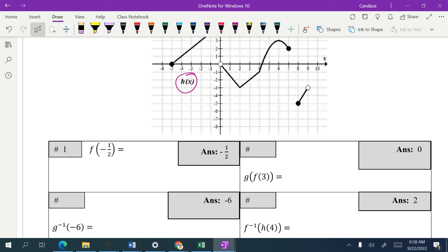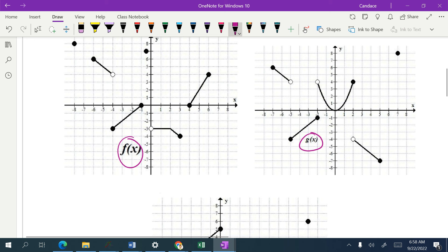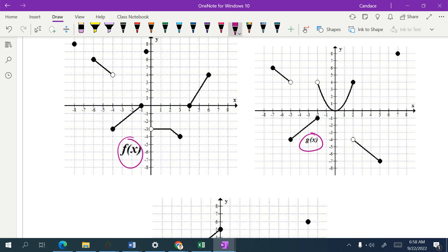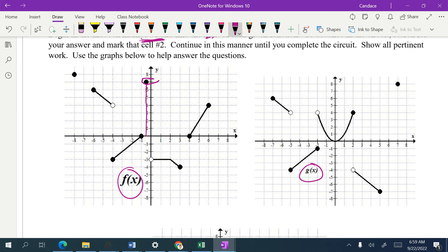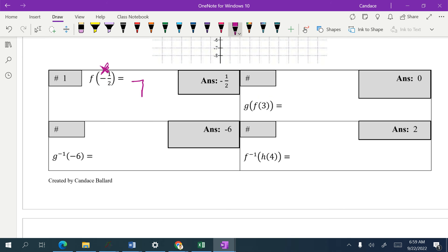So the first problem is asking me to find f of negative one half. Remember this is an input, this is the x value because there's no little negative one on it. So I'm going to go to my f graph and I'm going to find the x value of negative one half. So I'm looking at the x value of negative one half and I'm looking for a solid dot or line. And you'll notice that that's happening at seven. So I say that that's seven.